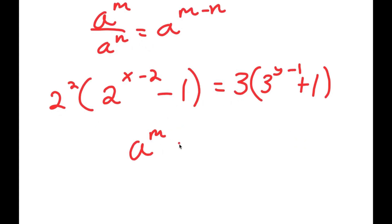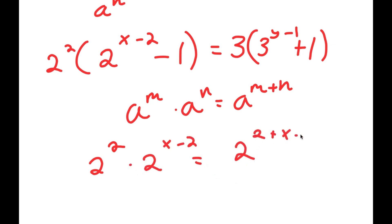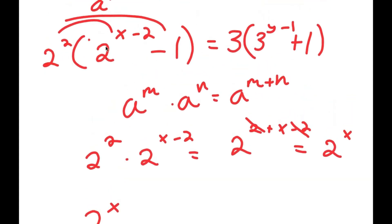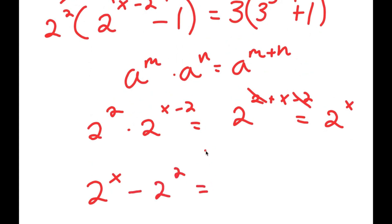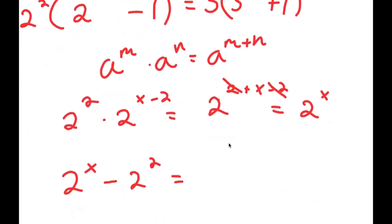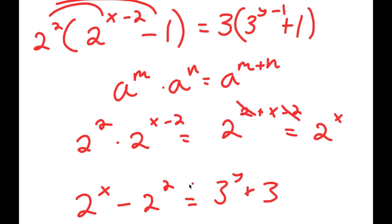Using the product of powers property — a to the power of m times a to the power of n equals a to the power of m plus n — multiplying 2 squared by 2 to the power of x minus 2 gives 2 to the power of 2 plus x minus 2, and the 2 and negative 2 cancel, leaving 2 to the power of x. So 2 squared times 2 to the power of x minus 2 is 2 to the power of x, and 2 squared times negative 1 is negative 2 squared. This equals 3 to the power of y plus 3, confirming the factoring is correct.